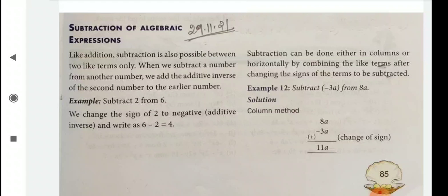Like addition, subtraction is also possible between two like terms only. When we subtract a number from another number, we add the additive inverse of the second number to the earlier number. Okay, let's see some example.